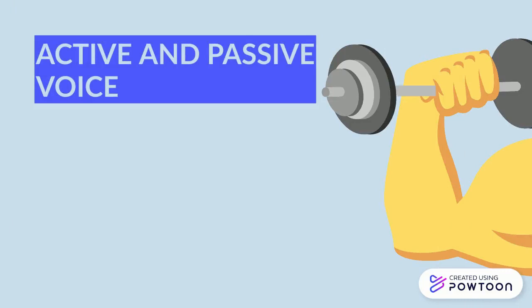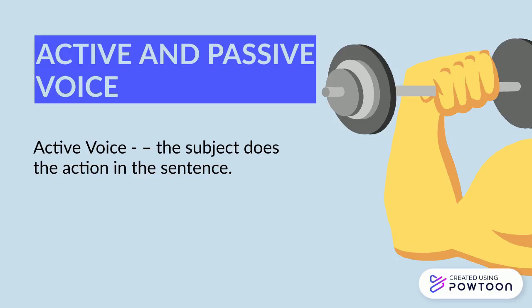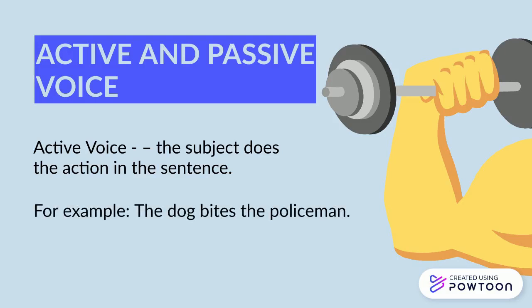Active voice — the subject does the action in the sentence. For example, the dog bites the policeman. The subject in the sentence is the dog, and it bites the policeman, making it the one performing the action in the sentence.